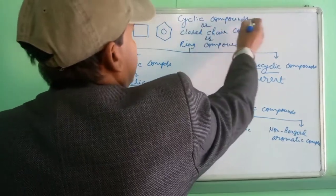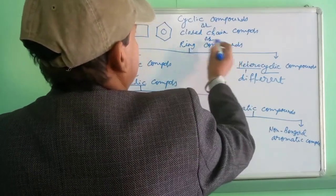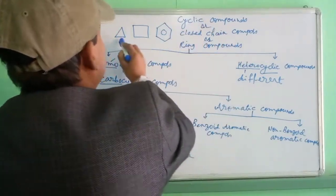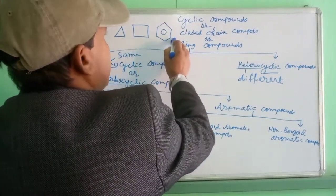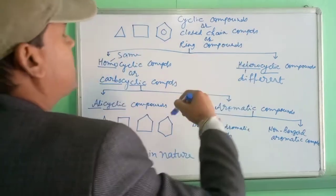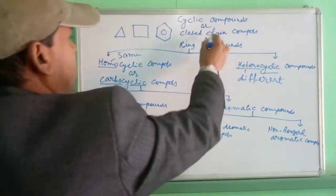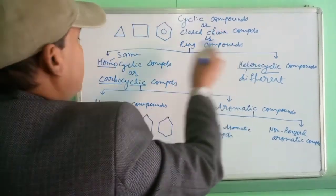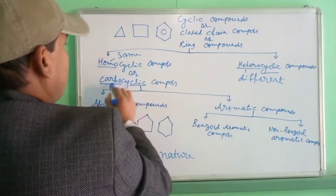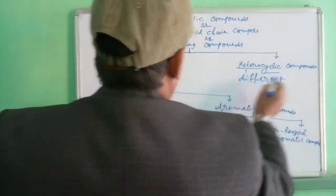Now, cyclic compound, closed chain compound, or ring compound — examples include cyclopropane, cyclobutane, and benzene. Ring means closed chain compound. This class is further divided into two subclasses: homocyclic or carbocyclic, and heterocyclic.